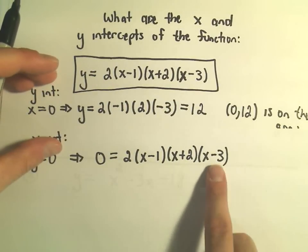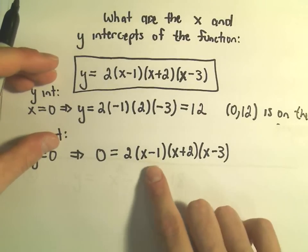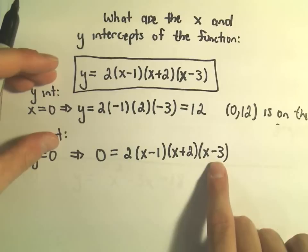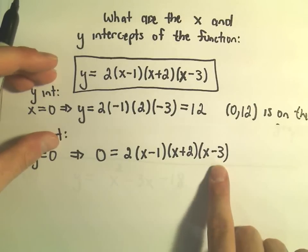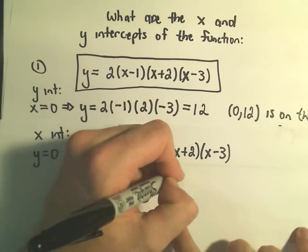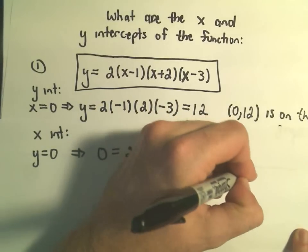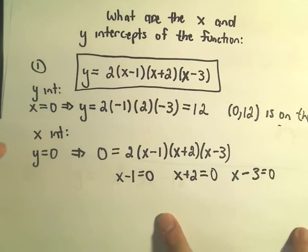The good thing is that the right side is factored. We've got 2 times some number times some number times some number. To get 0 on the right, either x minus 1 equals 0, or x plus 2 equals 0, or x minus 3 equals 0.